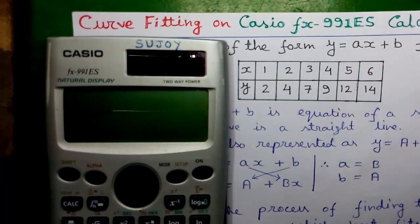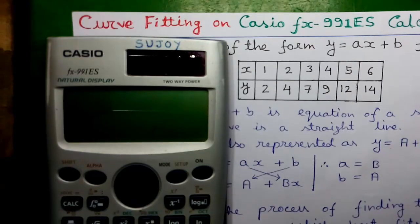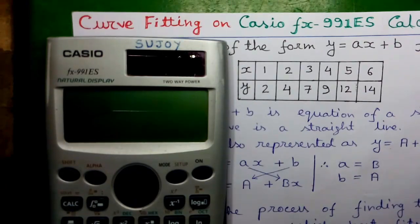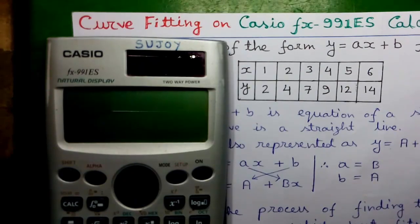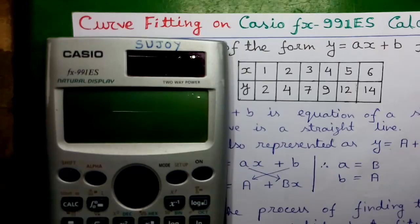Do you know? You can directly find out the equation of the line. You can find the correlation coefficient R. You can find out the value of X for a given value of Y, and the value of Y for a given value of X. You can find out the values of A and B, and so many things directly on the scientific calculator without doing the mathematics or without drawing any graph. Isn't it cool?